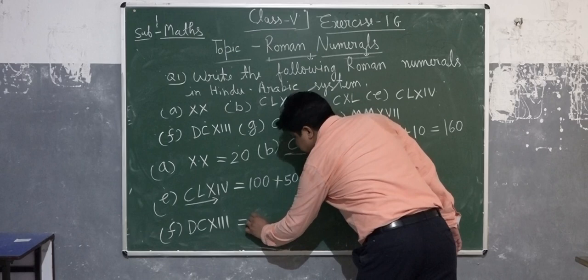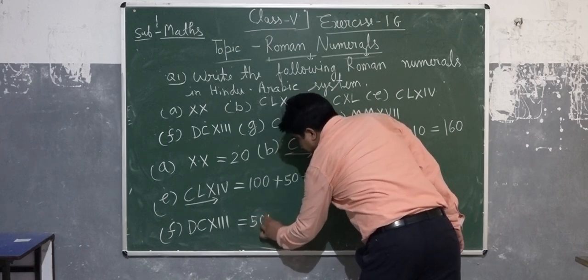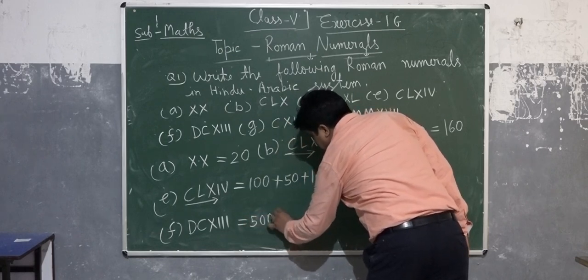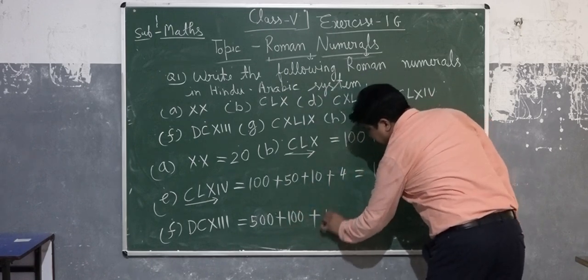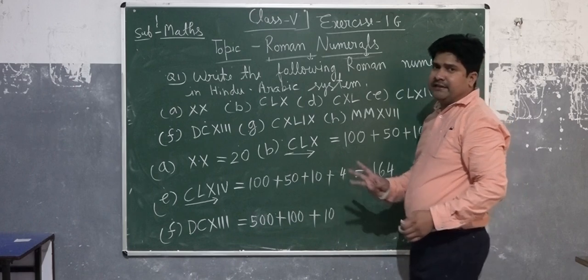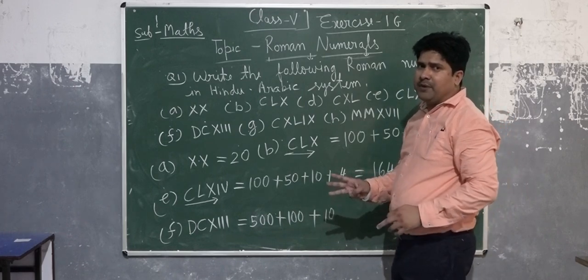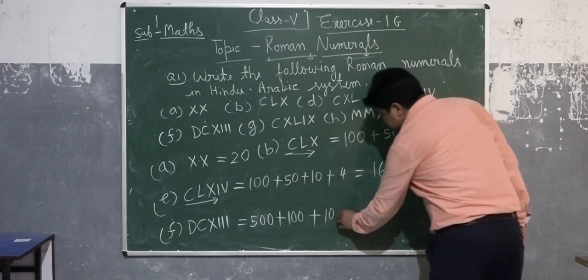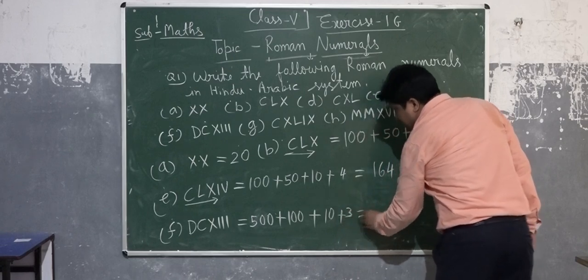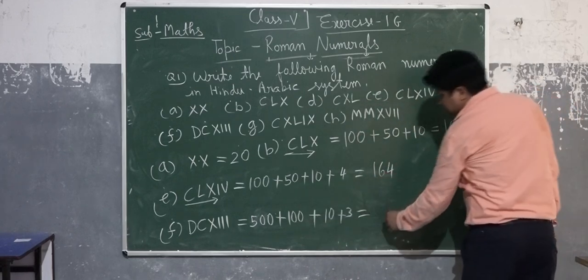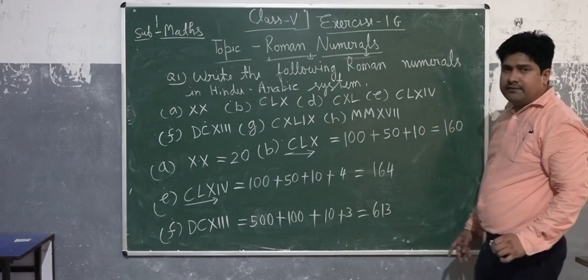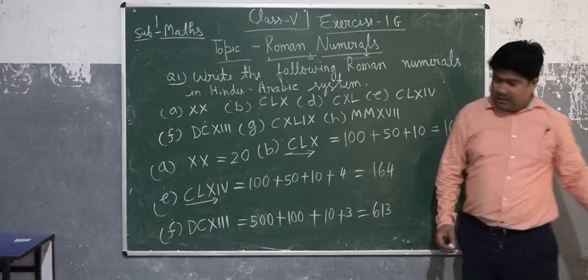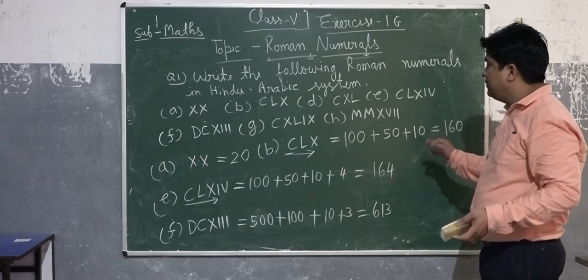Value of D is 500, value of C is 100, value of X is 10, and I is repeated 3 times, so value of III is 3. It gives what? 613. 613, okay students?